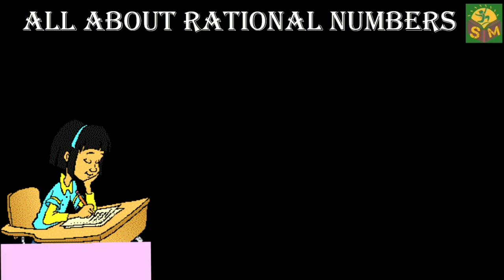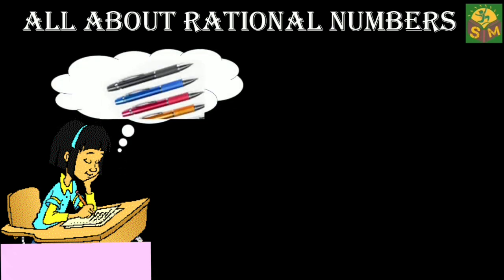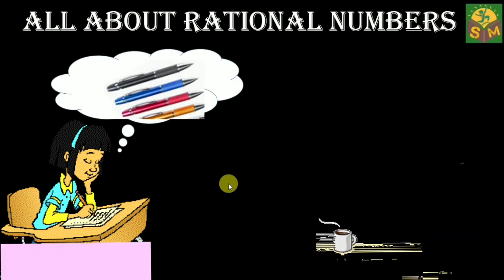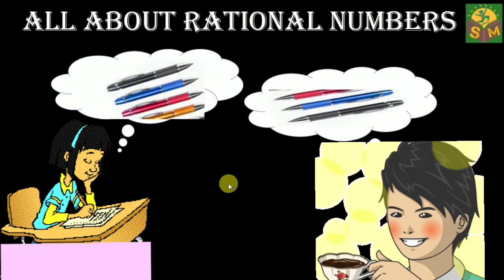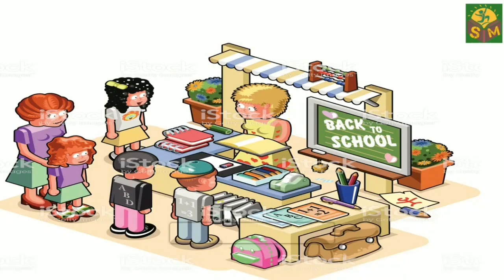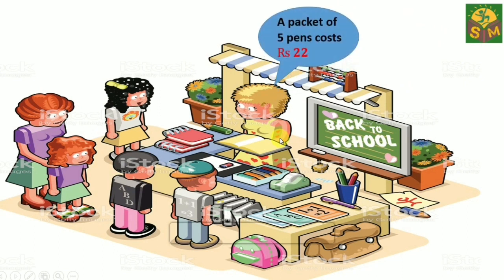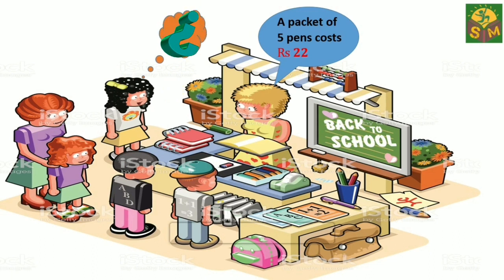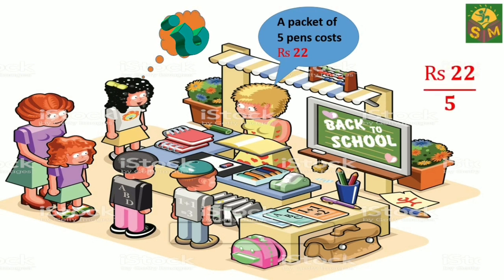Sanna wants to buy three pens at five rupees each. Her friend Satish wants to buy two similar pens. They went to a wholesale shop where the shopkeeper said that a packet of five pens costs 22 rupees. How much does each pen cost? We can easily calculate the cost of each pen by dividing 22 rupees by five.